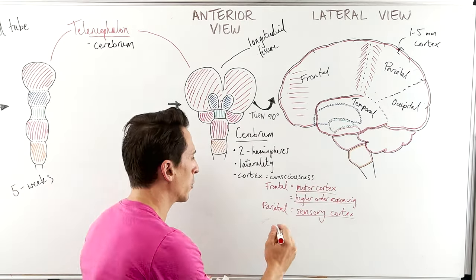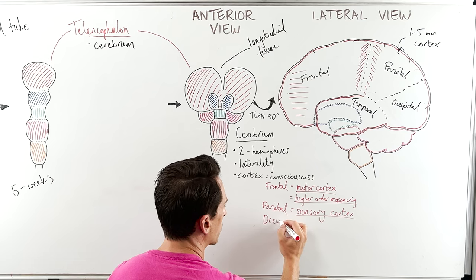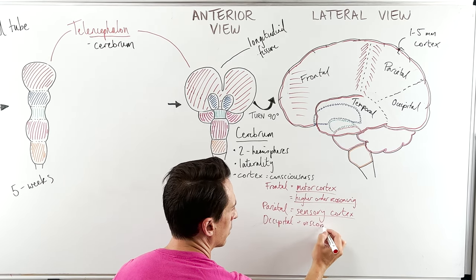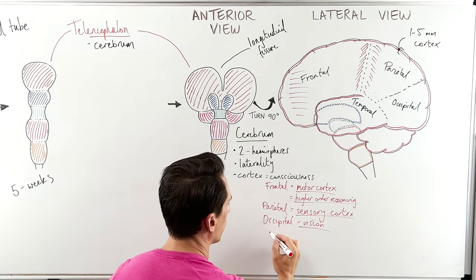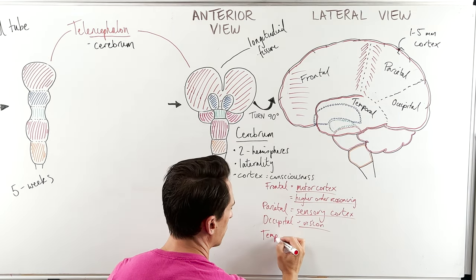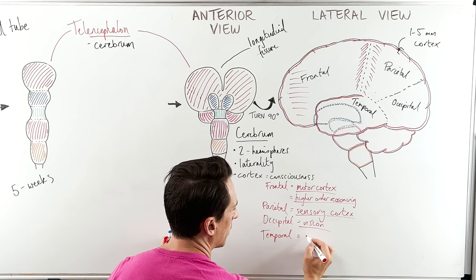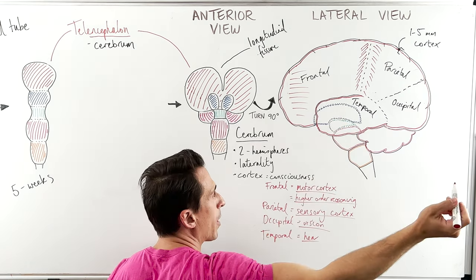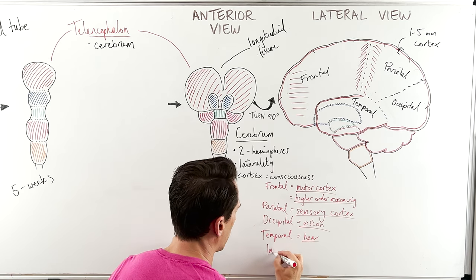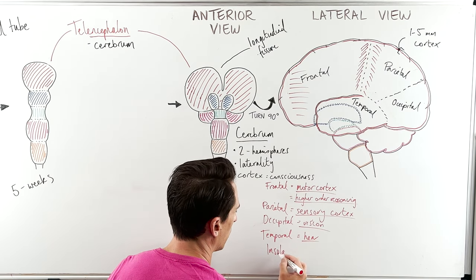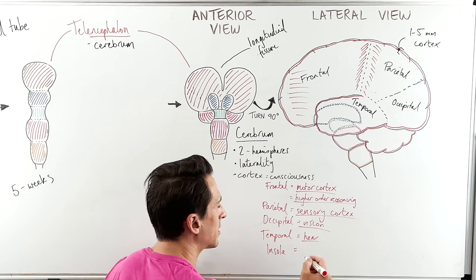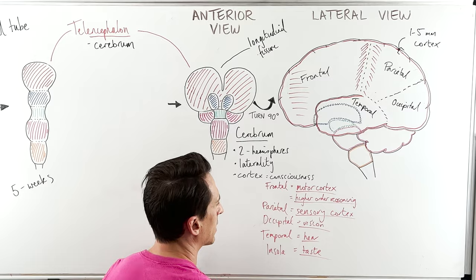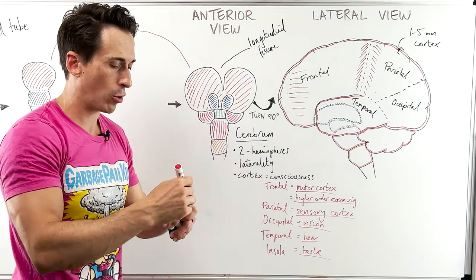The occipital lobe simply allows us to be able to see — it's important for vision. The temporal lobe is important for us to be able to hear. And lifting that temporal lobe up and having a look at the insula — it's important for taste, or gustation. That's a quick overview of the various lobes.